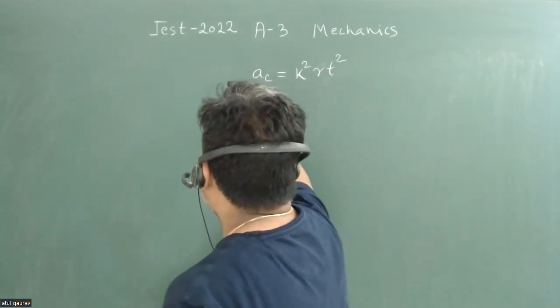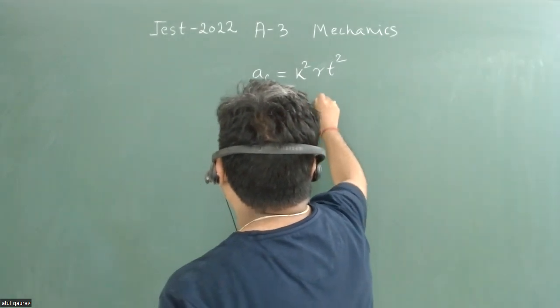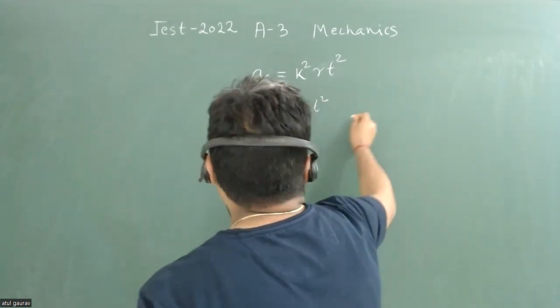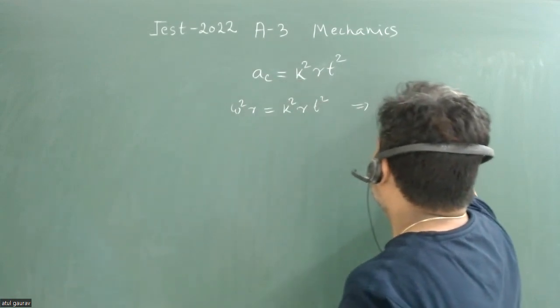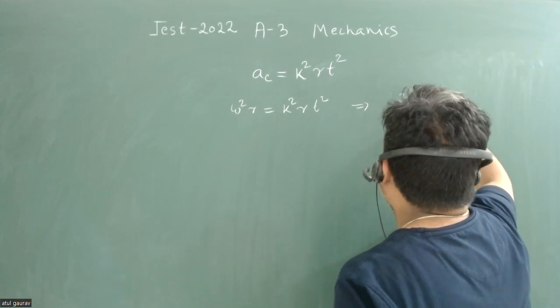It is given that ω²r = k²rt². So from here we can have ω² = k²t².